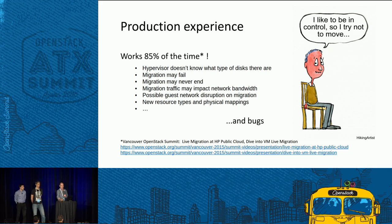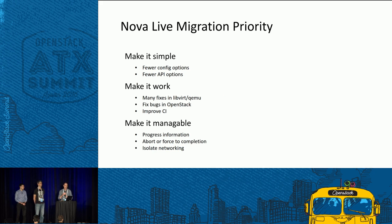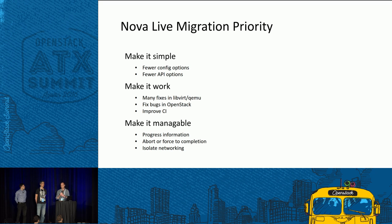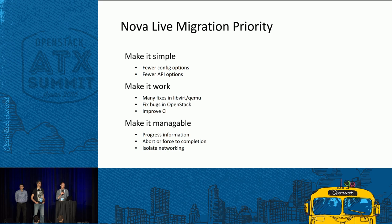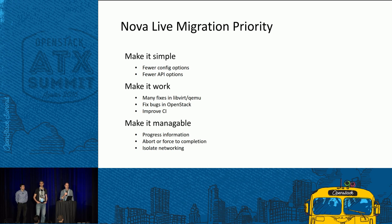We wanted to improve the situation, so we started a sub-team for live migration in the Nova project, and in the Mitaka cycle made it a priority. Based on operator experience, the goals were: make it more simple by reducing complicated parameters and config options, make it work by picking up newer versions of QEMU/KVM with bug fixes and improving CI, and make it manageable — because once you started a migration, there was nothing you could do except wait.